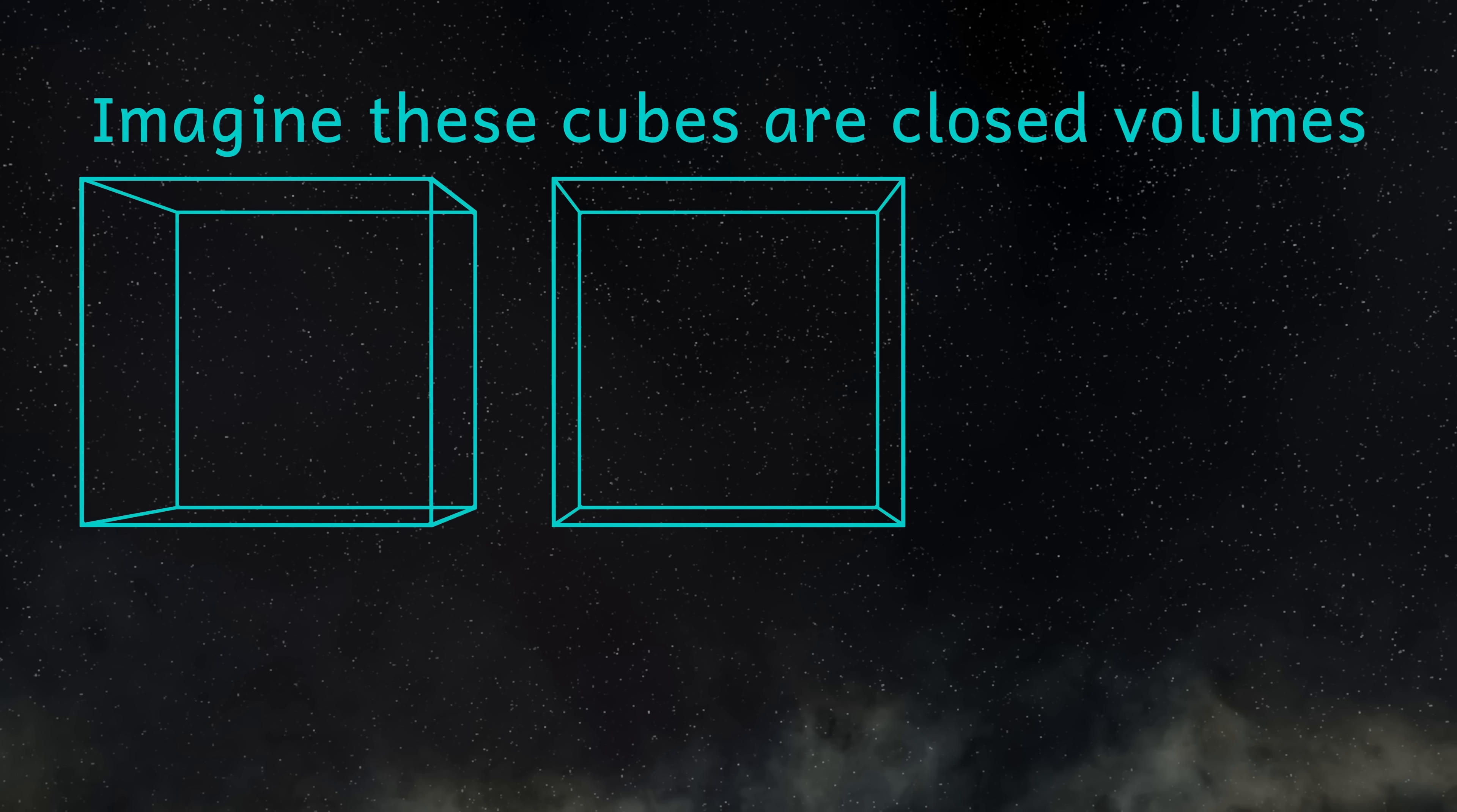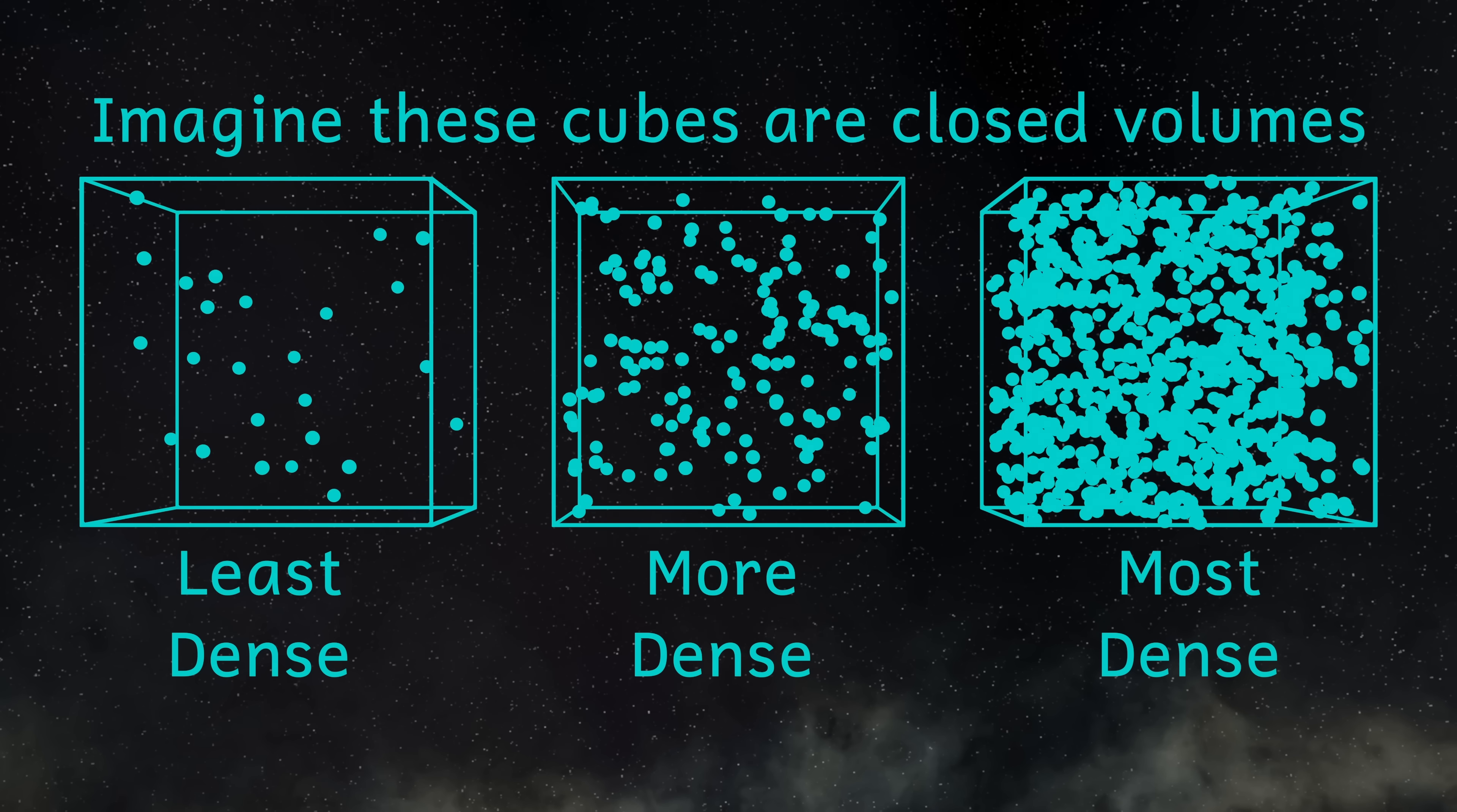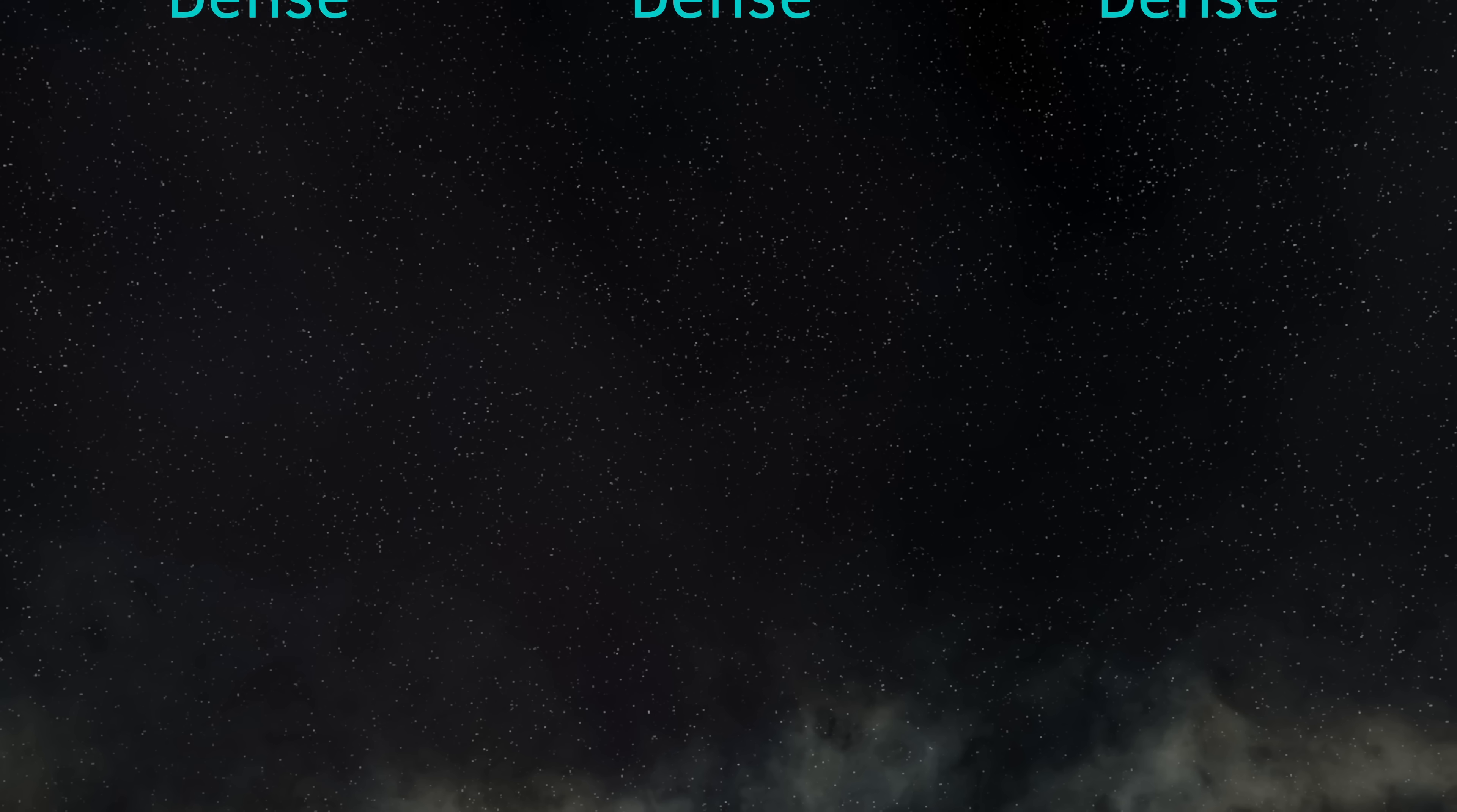Before we start we need to know what density is. Density is a measure of how tightly packed a material is. In other words, how much stuff is packed into a certain volume of space. To work out density then we need a formula and units. Density, which is denoted by the Greek letter rho, equals mass divided by volume.